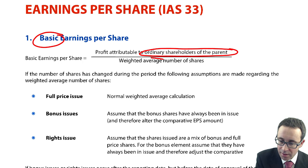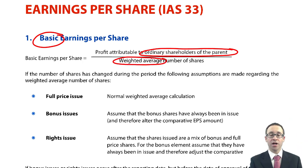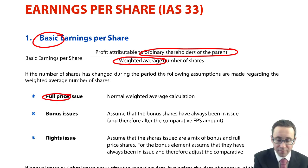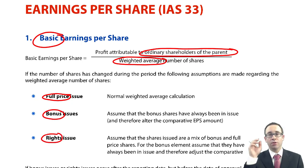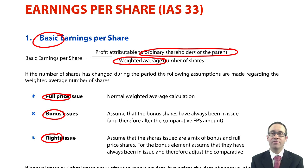So what we needed to do is look at a weighted average number of shares that were in issue. There were three scenarios: an issue at full price — at your standard market value; a bonus issue; and then a rights issue. A full issue is nice and straightforward — it was just a normal weighted average calculation. Remember, that weighted average calculation was based upon a number of months.